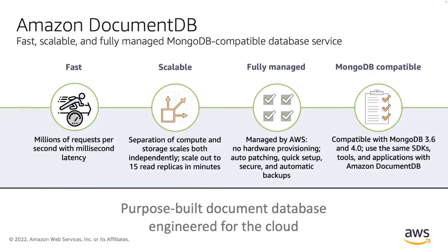Fast, in that we can process millions of requests per second with millisecond latency. Scalable, in that we separate compute and storage, which allows us to scale both independently. We can scale out to 15 read replicas in minutes. Fully managed means no hardware provisioning, automatic patching, quick setup, secure, and automatic backups. We are a MongoDB-compatible service, compatible with MongoDB 3.6 and 4.0 versions. You can use the same SDKs, tools, and applications with Amazon DocumentDB. Overall, this is a purpose-built document database service, engineered for cloud scalability.